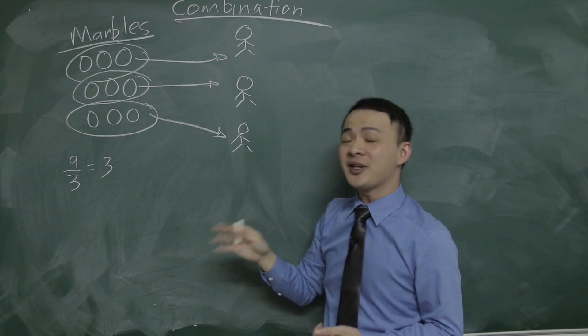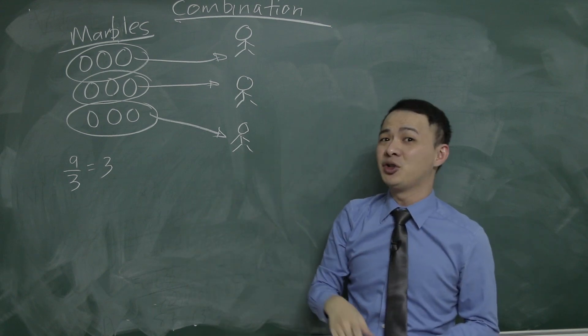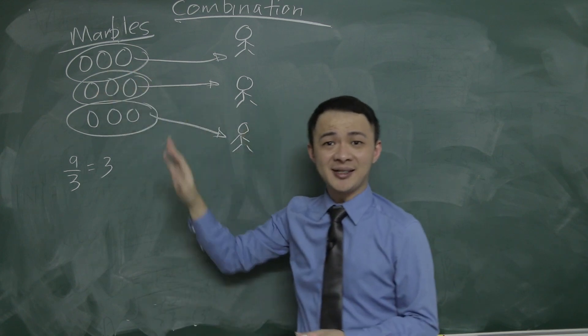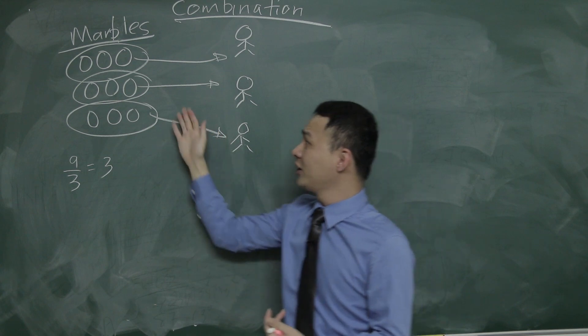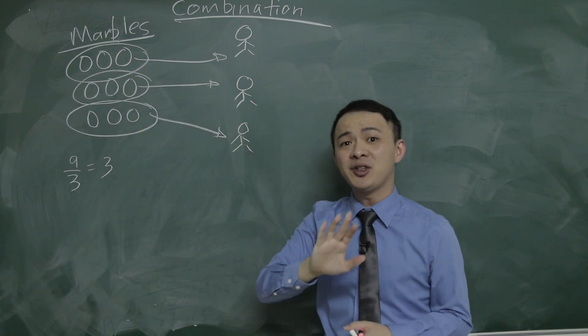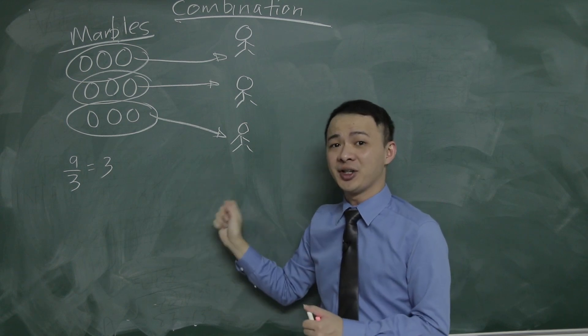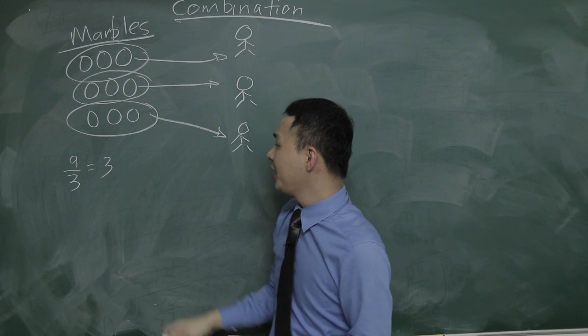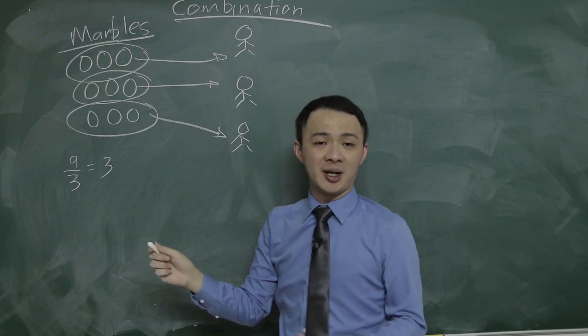So how do you do this? First thing is you have to think whether you should use NPR or NCR, but because in this case the arrangement doesn't matter because all the nine marbles here are exactly the same. So we will never use permutation in this kind of question, we will only use combination.